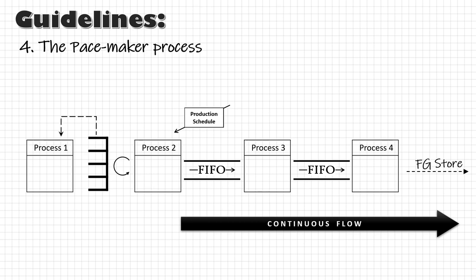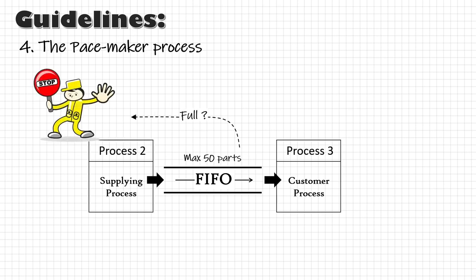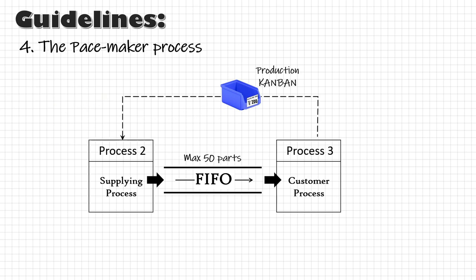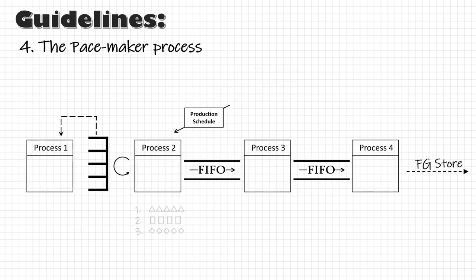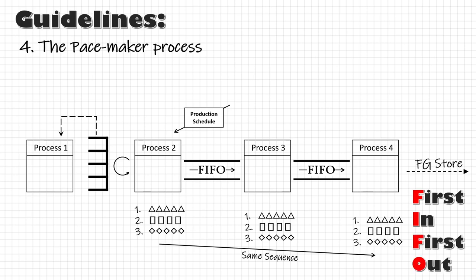You may ask: what's a FIFO lane? Think of a FIFO lane as a chute that can hold only a certain amount of inventory. The supplying process feeds parts from one end, and the customer process receives parts from the other end. If the FIFO lane gets full, the supplying process must stop producing until the customer has used up some inventory. Once the FIFO inventory starts getting used, empty bins are released as Kanbans to the supplying process so it can resume production. Process sections 3 and 4 will follow the same production sequence as process section 2, since whatever part goes in first comes out first — first in, first out.